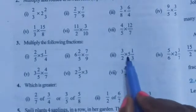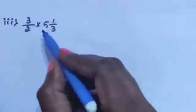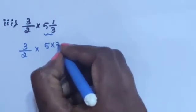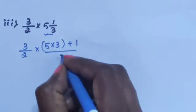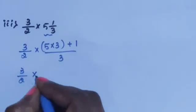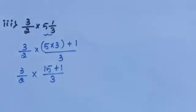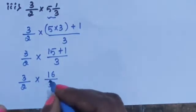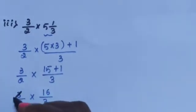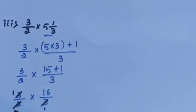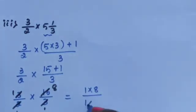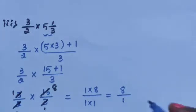Next sub-question 3: 3³/2 into 5⅓. 5⅓ is a mixed fraction, convert into improper fraction. 5 into 3 plus 1 divided by 3. 15 plus 1 is 16 divided by 3. Then 3 and 3 get cancelled. Next, 2 and 8: 2 eights are 16. Remaining 1 into 8 divided by 1 into 1. 1 × 8 = 8. The answer is 8.